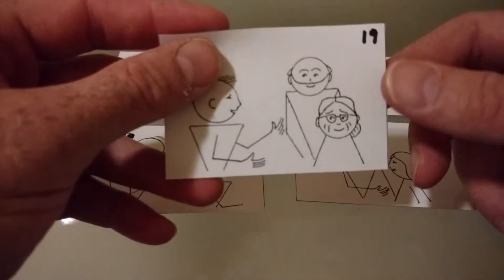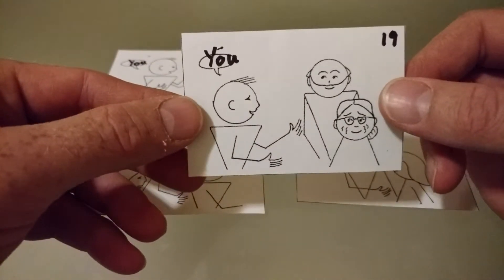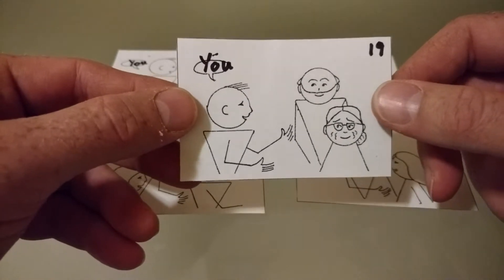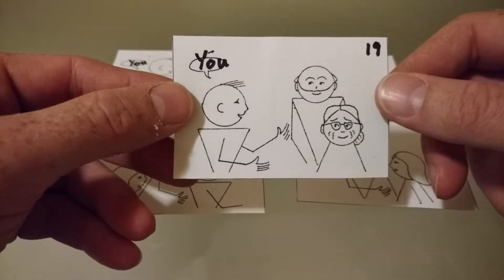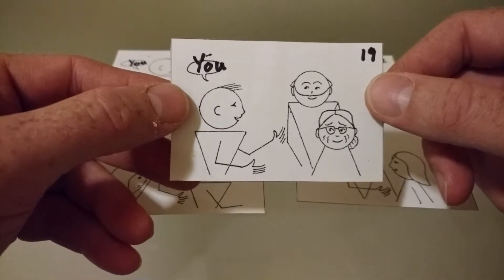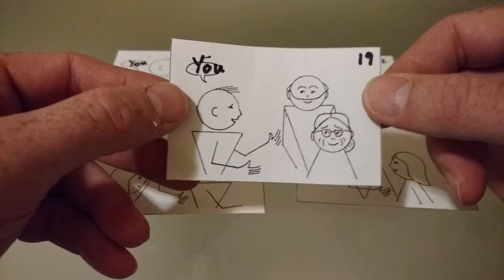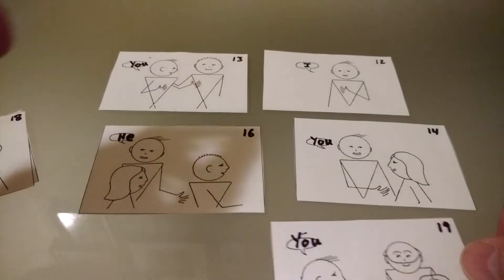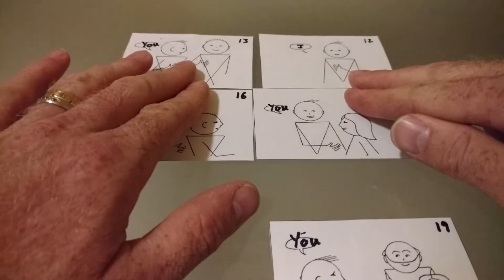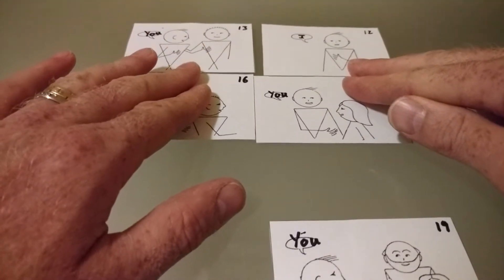In English, you can also be used for more than one person. You are my grandparents. You are my grandparents. You are my grandparents.